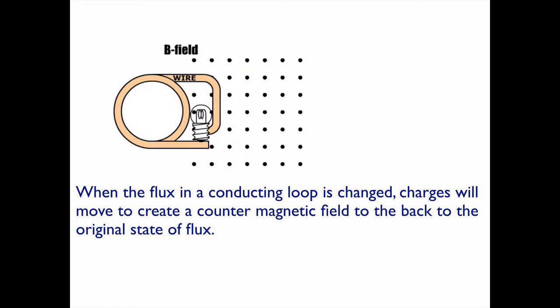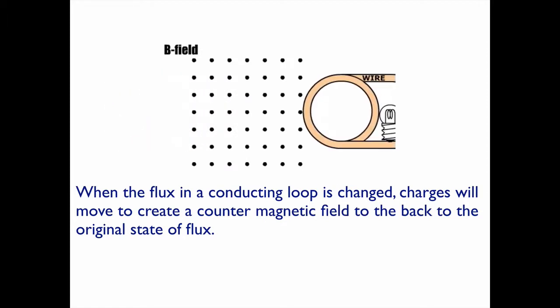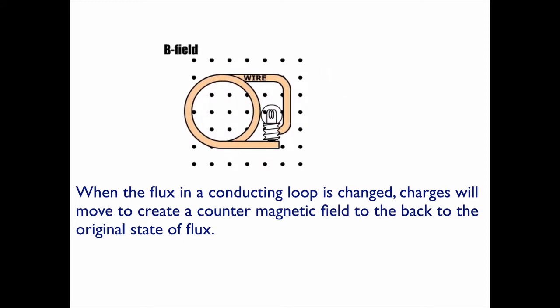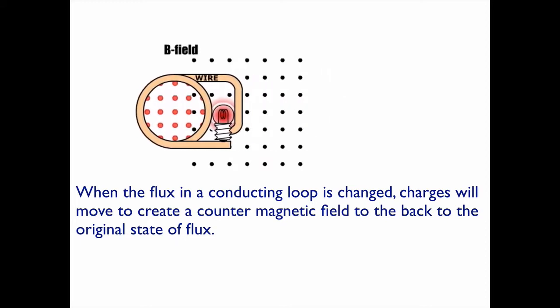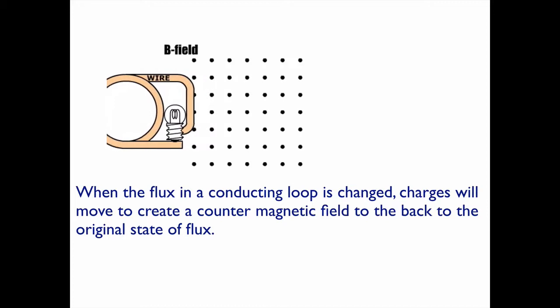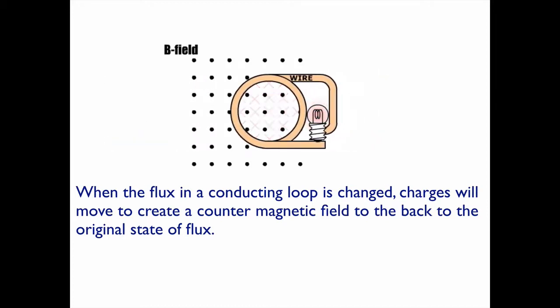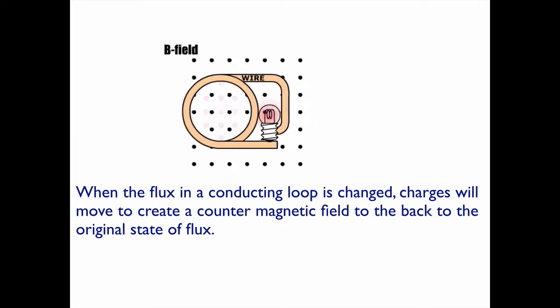And what I know from Lenz's Law is that if I do anything to change the flux, the amount of magnetic field inside that coil, if I do anything to change it, then charges will move to try to counter the change. Now to counter the change, when you move charges, they're going to create their own magnetic field. So that's going to be the red that appears in the loop. And there's the red again.